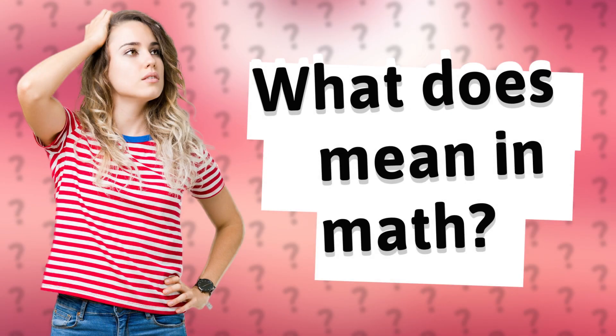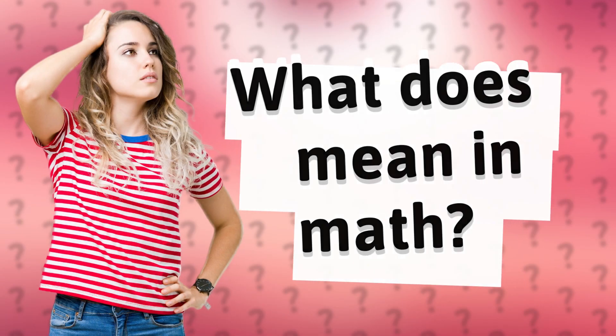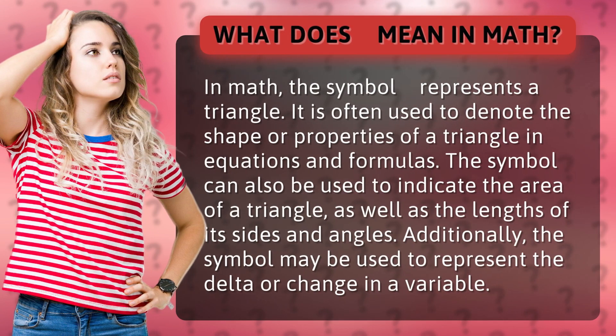What does a hollow up-pointing triangle mean in math? In math, the symbol hollow up-pointing triangle represents a triangle. It is often used to denote the shape or properties of a triangle in equations and formulas. The symbol can also be used to indicate the area of a triangle, as well as the lengths of its sides and angles.